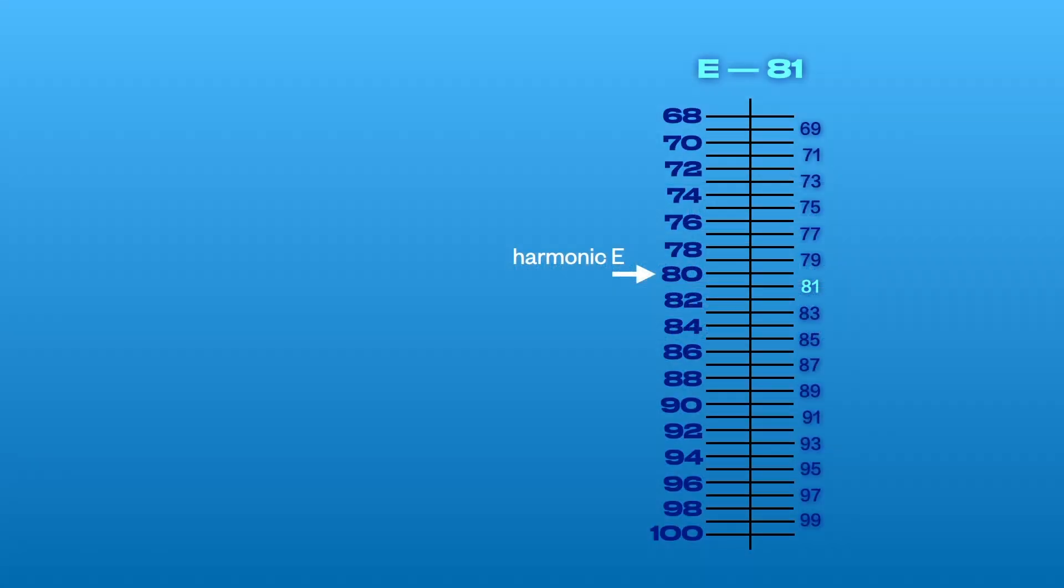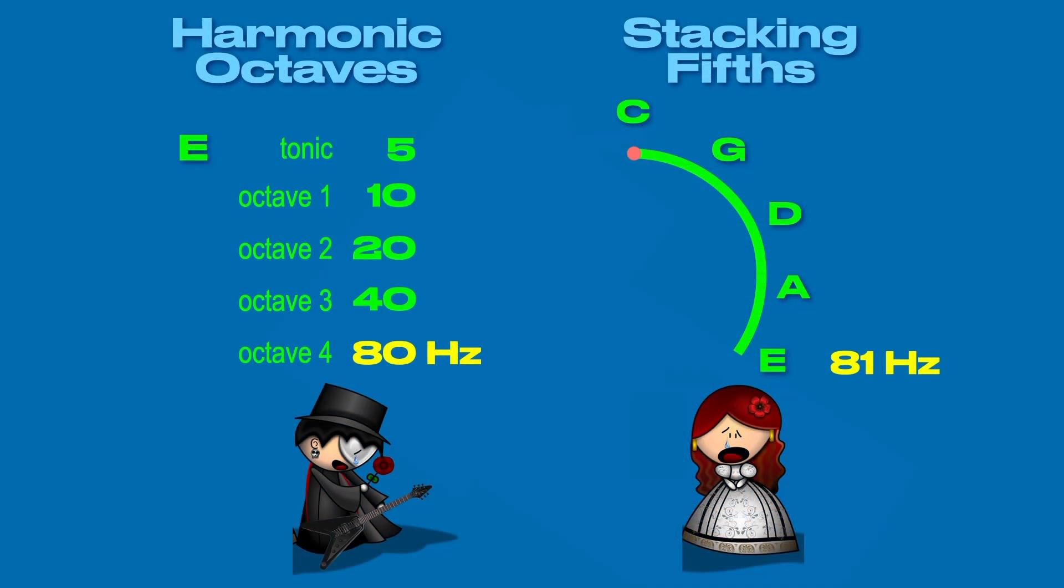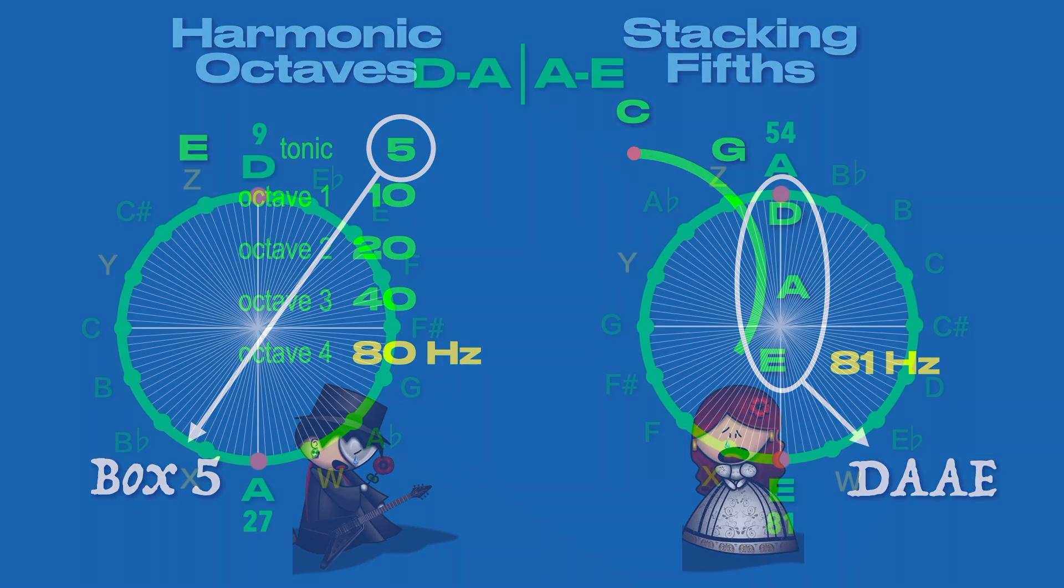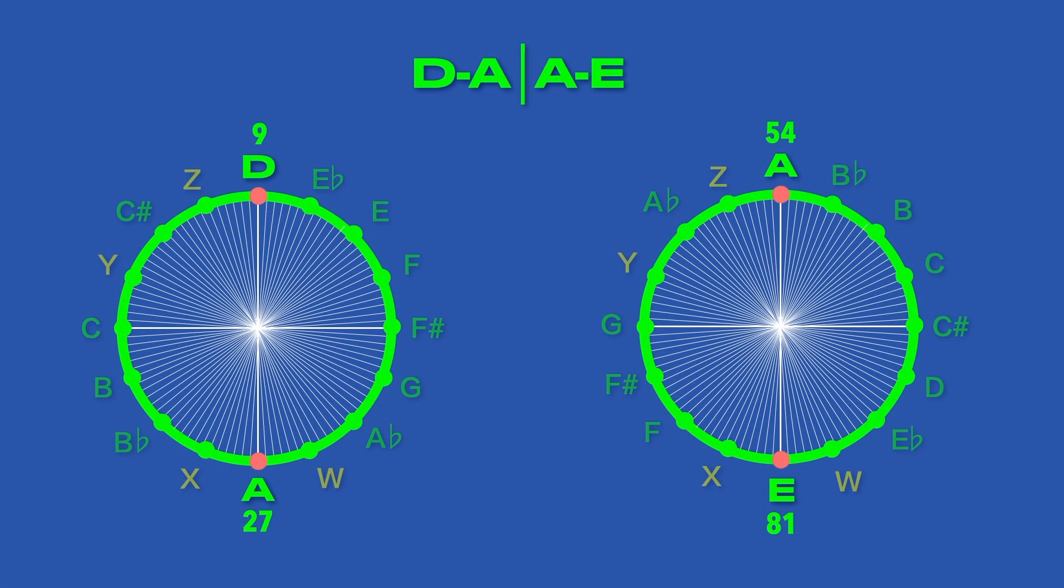Moving on to the second value of 81, that's the note of E. The harmonic series places E at harmonic 80, but Pythagorean tuning through the stacking of fifths generates E at 81. And in fact, the values of 80 and 81 are personified in the Phantom of the Opera, where the phantom represents harmonic E and Christine Daaé represents Pythagorean E. Her last name also illustrates two sets of stacked fifths, D to A and A to E, culminating in the value of 81.